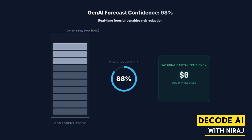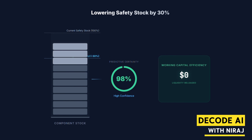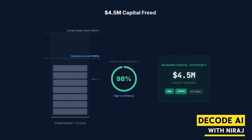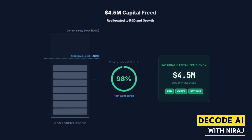Inventory reduction: this intelligence translates directly into working capital efficiency. By achieving this level of certainty and real-time foresight, we can confidently lower safety stock on specific high-risk, high-capital components by 25 to 30 percent, freeing up significant capital for R&D, CapEx, or shareholder returns.